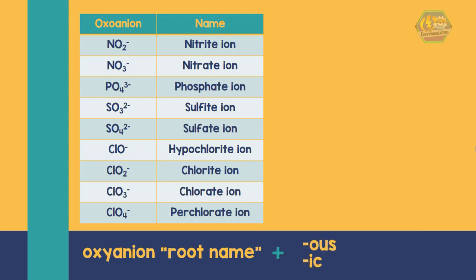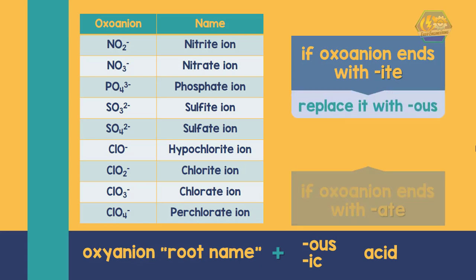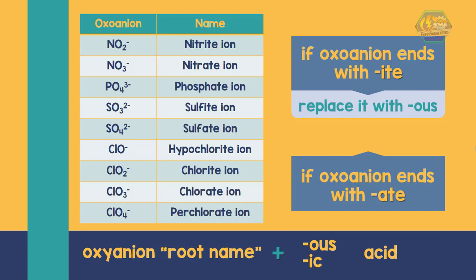To name an oxo acid, we use the general structure: oxo anion root name plus -ous or -ic for the first word, followed by acid for the second word. If the oxo anion name ends in -ite, replace it with -ous. If it ends in -ate, replace it with -ic. For example, let's name the corresponding acids from the table of oxo anions.